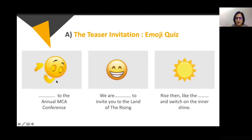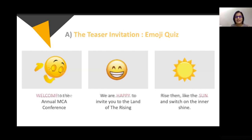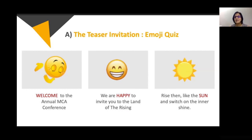The second teaser read: 'We are dash to invite you to the land of the rising what?' — the answers being 'happy' and 'sun.' And 'Rise then like the dash and switch on the inner shine' — the answer being 'sun.' So the full message became: 'Welcome to the annual MCA conference. We are happy to invite you — rise like the sun and switch on the inner shine.' The theme comes through right from the teasers.